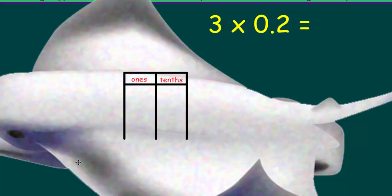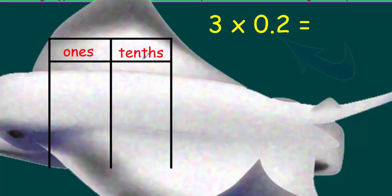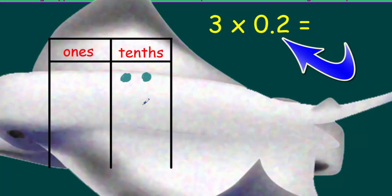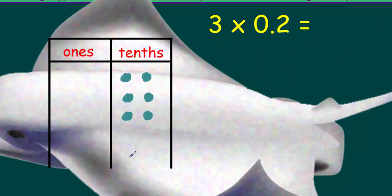Let's look at this very first one here. I'll go ahead and start to model that in my place value chart — let me make that a little bit larger. Let's go ahead and take our two tenths and show that on our chart. I'm going to draw two of those, and now we're going to make three copies of those two tenths. Look what we just did — we made three copies of two tenths. Now let's go ahead and do the algorithm.